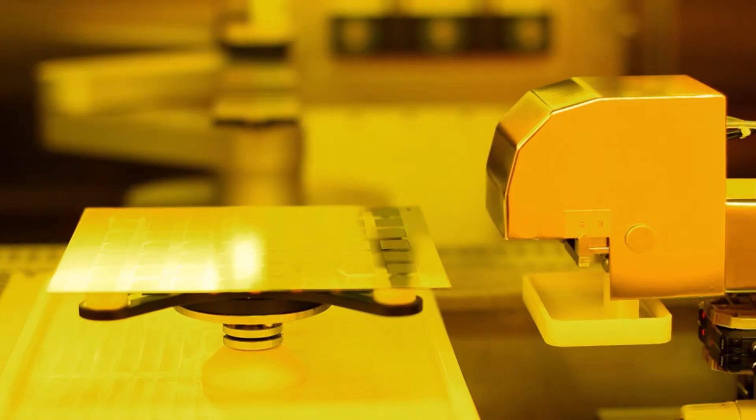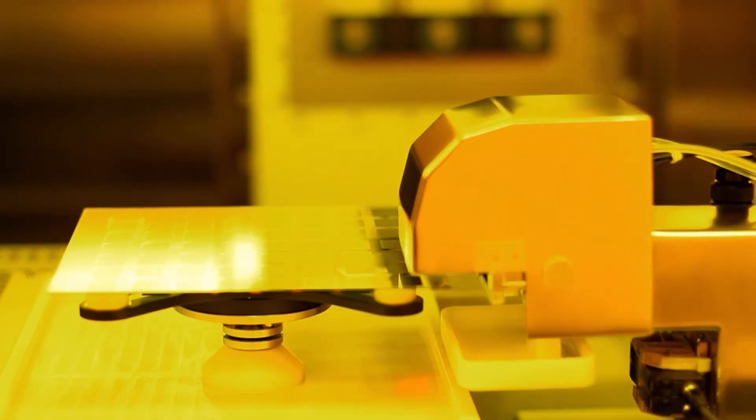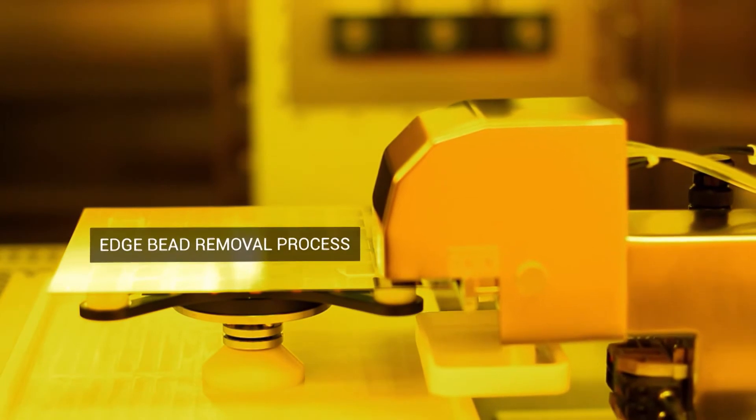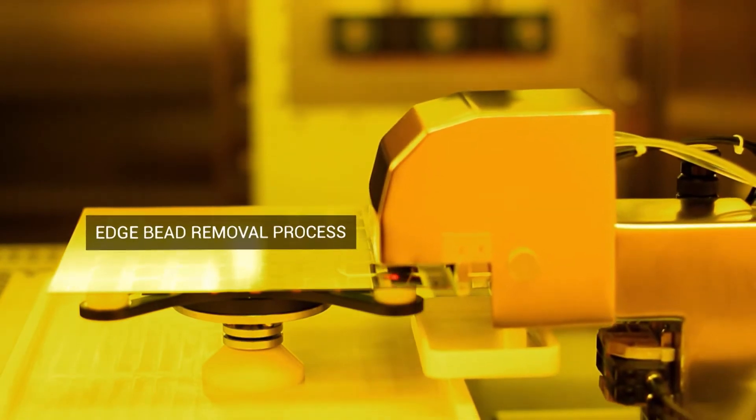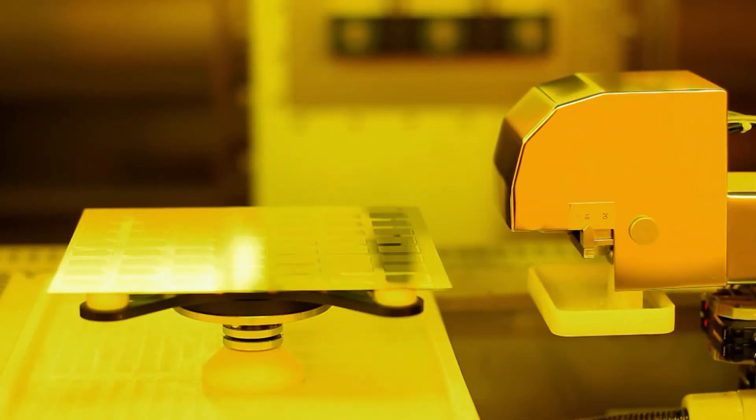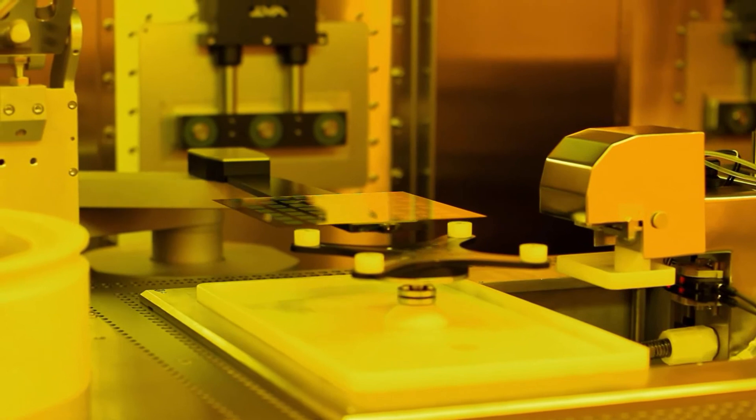Edge bead removal allows the edge coating to be removed over a predefined area, as specified by the device design. Precise positioning of the fluid nozzle controls the removal of both aqueous and solvent-based materials, maximizing the active area of the device.